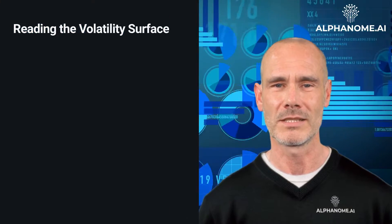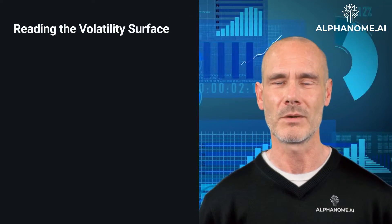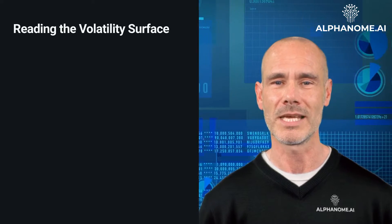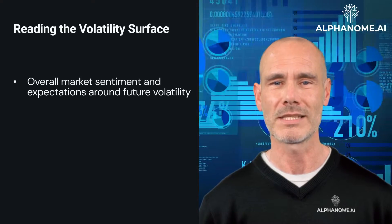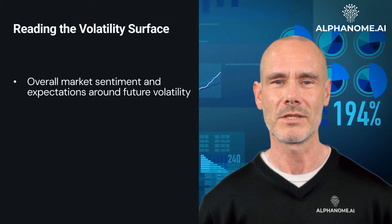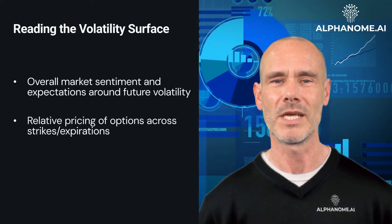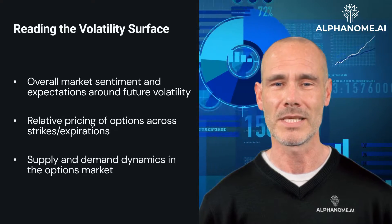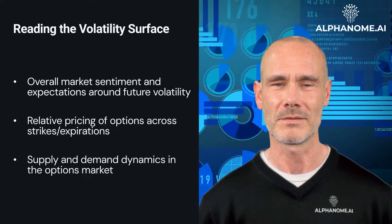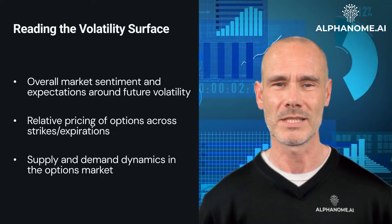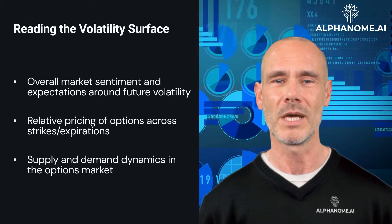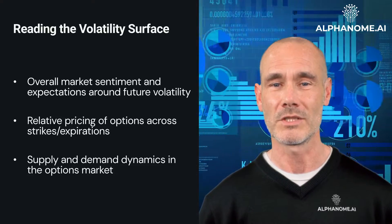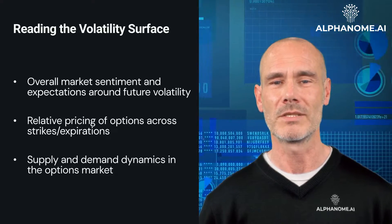By analyzing the shape, level, and dynamics of the implied volatility surface, investors can gain insights into overall market sentiment and expectations around future volatility, relative pricing of options across strikes and expirations, and supply and demand dynamics in the options market. For example, a steeply sloped volatility surface indicates that the market expects the underlying price to be range-bound. Monitoring changes in volatility surfaces can also alert investors to potential dislocations or mispricing of options.